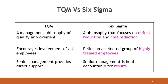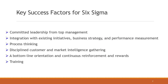Since TQM defines quality as meeting standards established by the organization, TQM delivers superior quality manufacturing goods, while Six Sigma delivers better results and customer satisfaction. The success factors of Six Sigma include shared change purpose, effective change leadership, a powerful engagement process, committed local sponsors, strong personal connections, sustainable personal performance, training, bottom-line orientation, and continuous reinforcement and rewards.